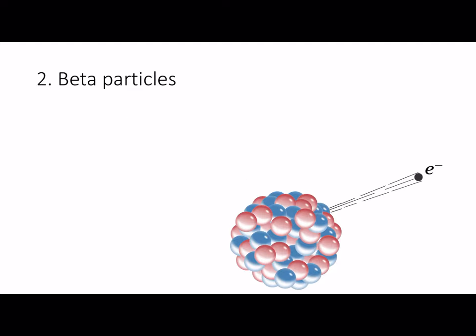Beta particles are fast moving electrons so they'd have a negative charge. Therefore if you pass it through an electric field it would deflect going by the negative and be attracted to the positive. It has a medium penetrating power but can be stopped by five millimeters of aluminum.